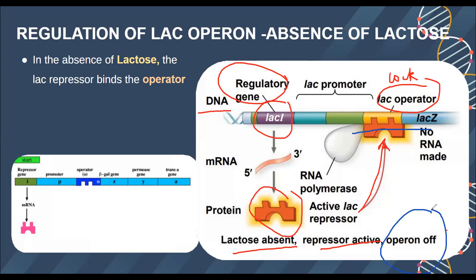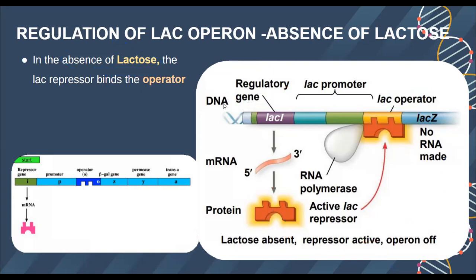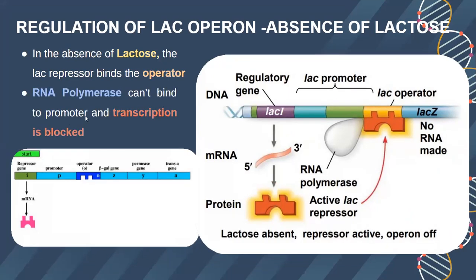The repressor protein is active and the RNA polymerase cannot move forward, so the operon is in the off position — no RNA is being made. The RNA polymerase cannot move forward because there is a lock on the operator. This is happening when there is no lactose; the operator is locked and the repressor protein works in a lock-and-key mechanism. So no transcription will take place because there is no lactose and no requirement for these enzymes. In the absence of lactose, the repressor is active and the operon is turned off.